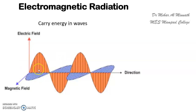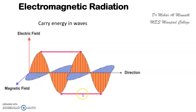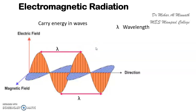In this wave, you can see peaks and troughs. The distance between any two peaks, or any two troughs, is called the wavelength, represented as lambda (λ). The distance from one peak to another peak is called one full wave. So lambda is the wavelength.